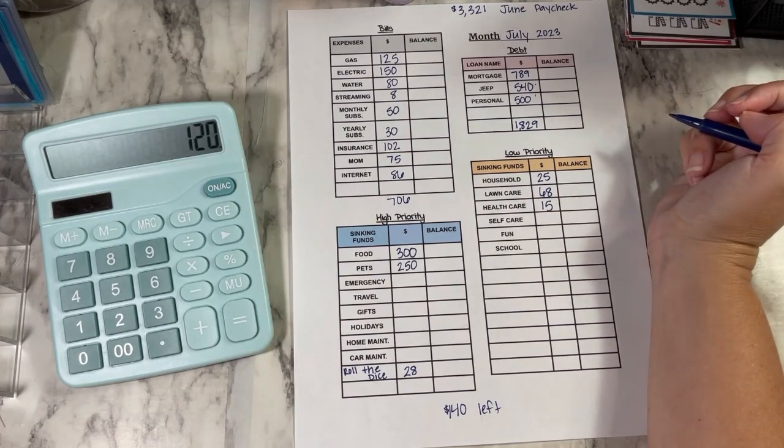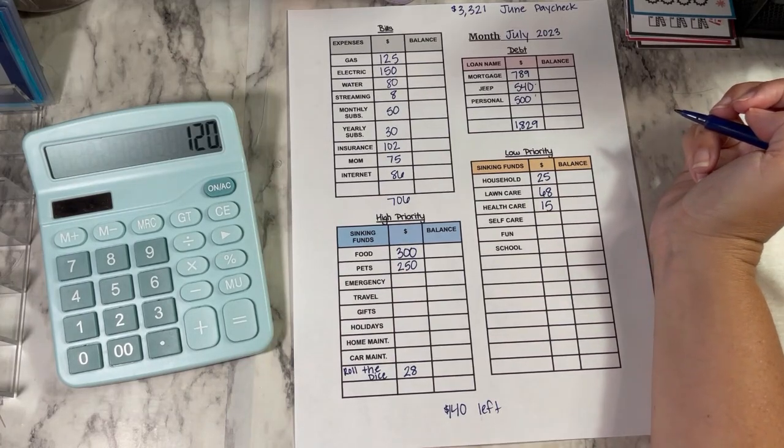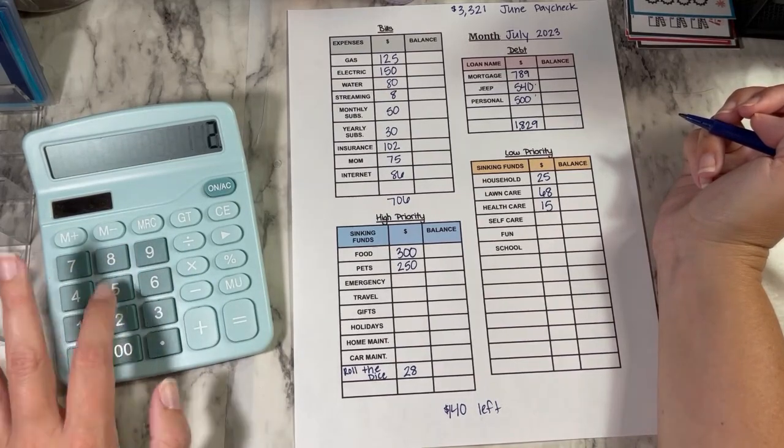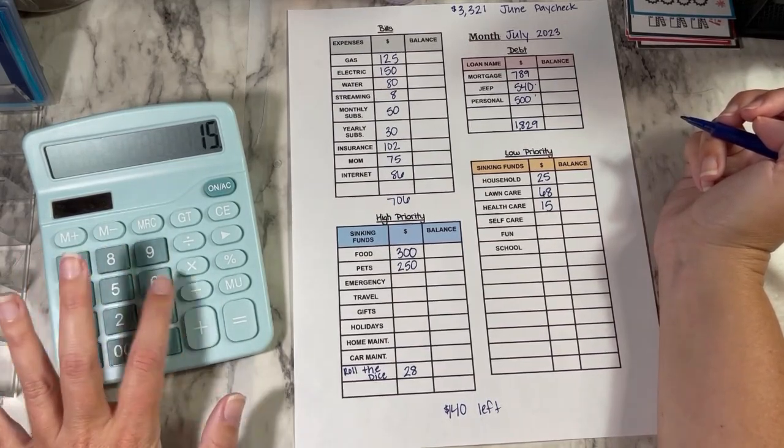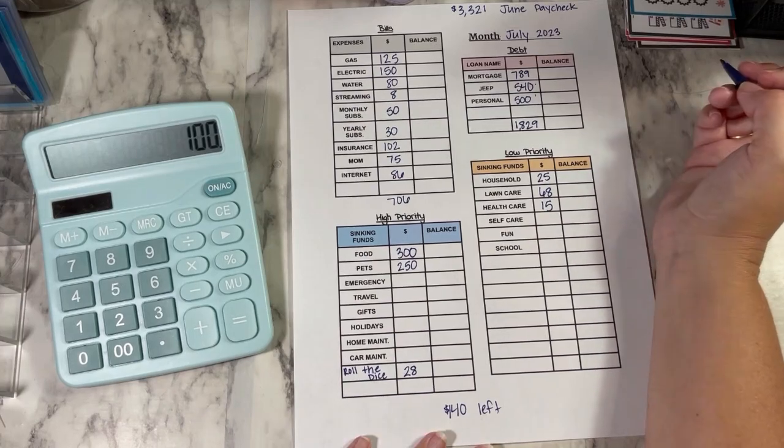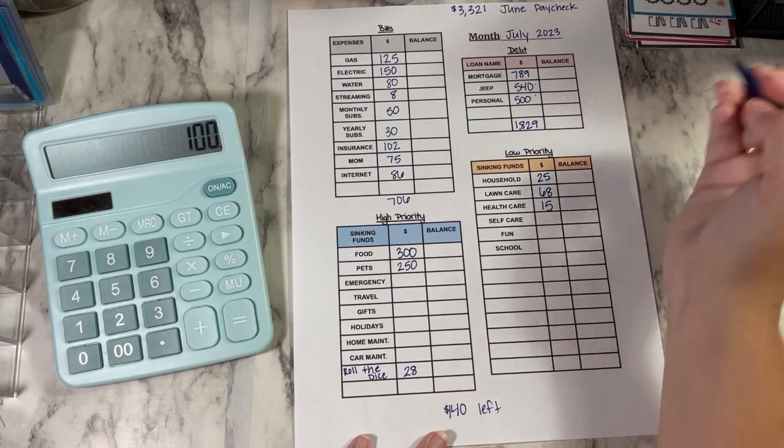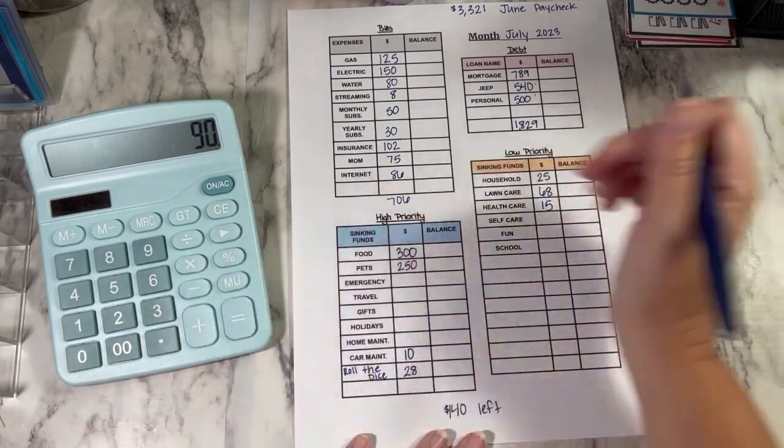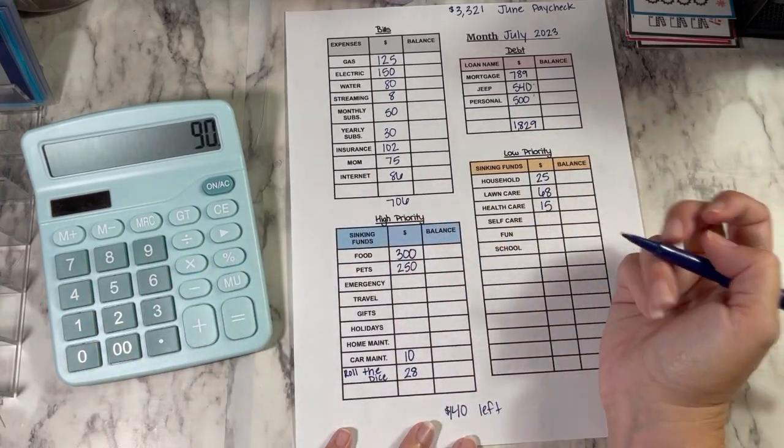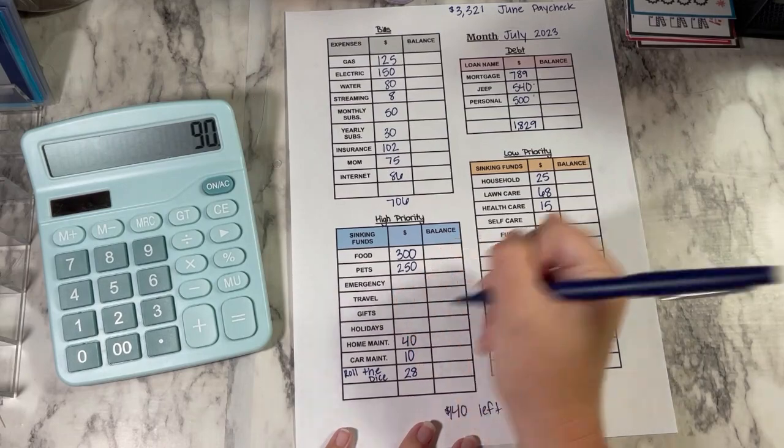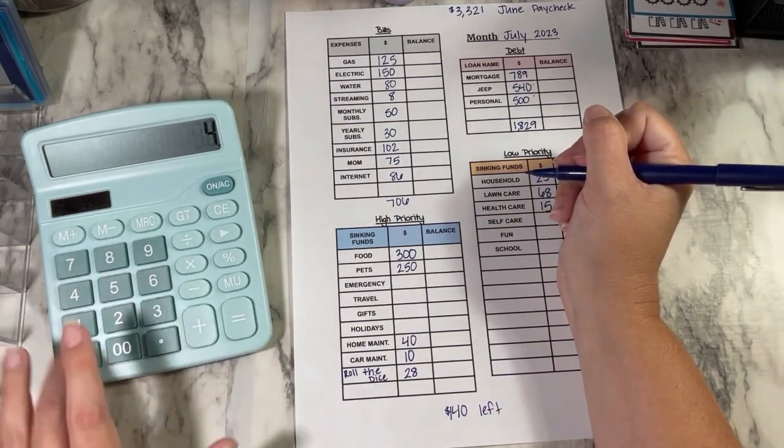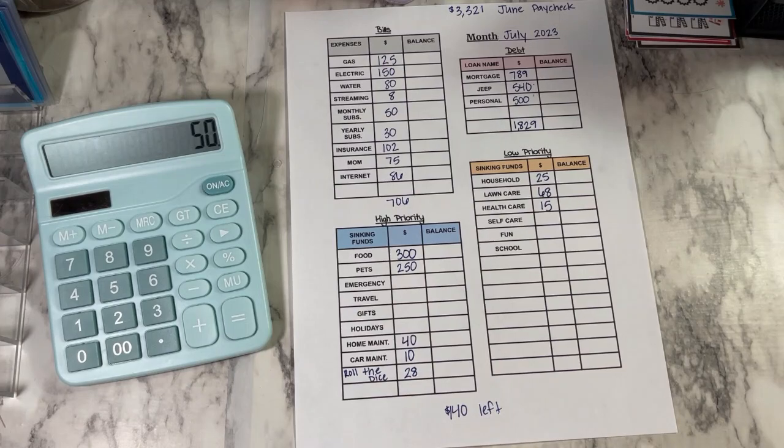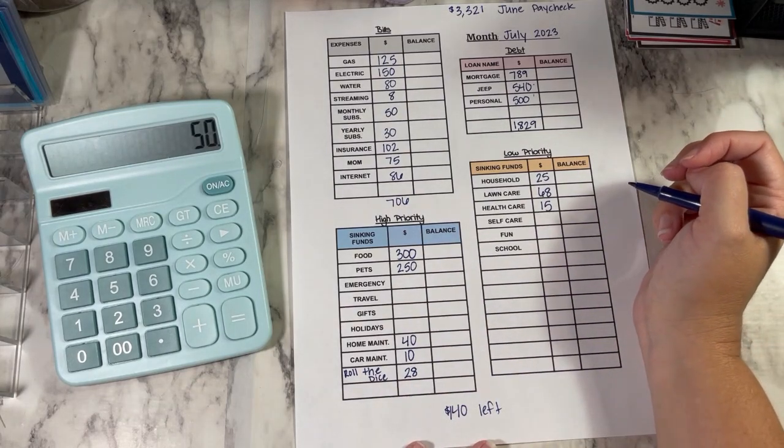$140 minus $25 minus $15. So now I have $100 left. I'm going to do $10 in car maintenance. I'm going to do $40 in home maintenance because there is some stuff that I want to do to my house at some point or that's going to need to be done.